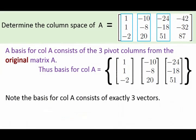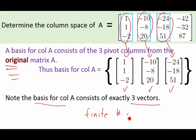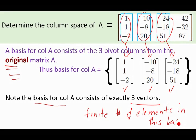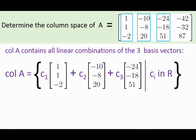Our basis for the column space consists of our three pivot columns from the original matrix. Notice that our basis for this particular example contains exactly three vectors — one, two, three elements in our basis. Because we are looking at subspaces of R3, our spaces will always be finite dimensional. So we have exactly three elements, which means our column space will be three dimensional. Our column space consists of all linear combinations of our three basis vectors, so there are an infinite number of elements in col A.